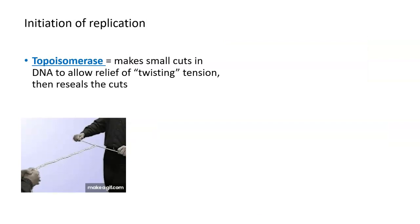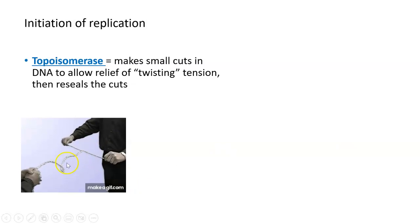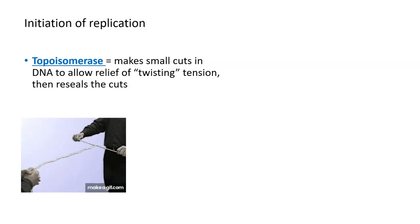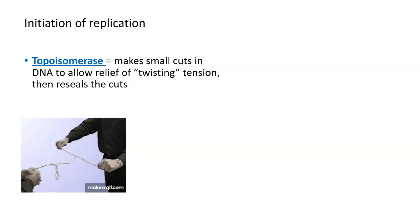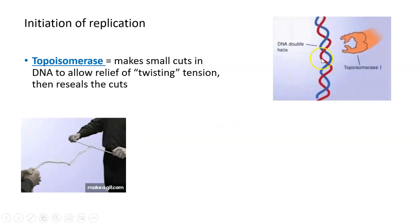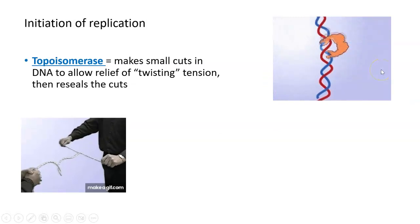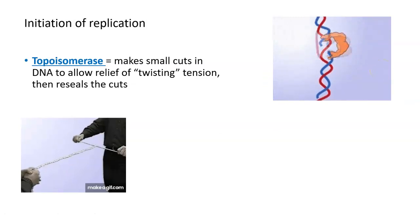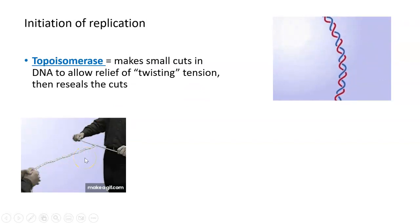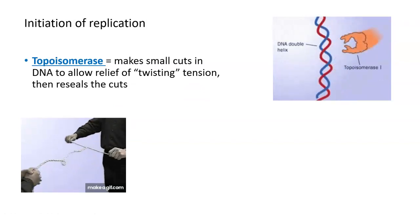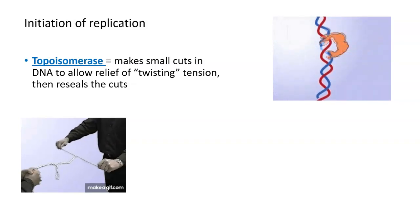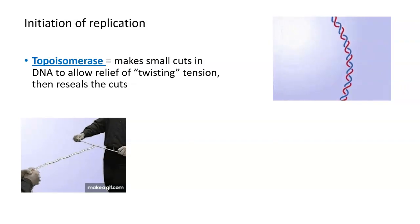As DNA helicase is unwinding and unzipping DNA, it actually ends up creating a tension or supercoiling of the DNA that's in front of it. There's another enzyme there to relieve some of that tension or supercoiling caused by DNA helicase unwinding and unzipping the DNA. This enzyme is called topoisomerase, and its job is to make small cuts in the DNA to allow relief of that twisting tension, and then topoisomerase religates or reseals those cuts back together.